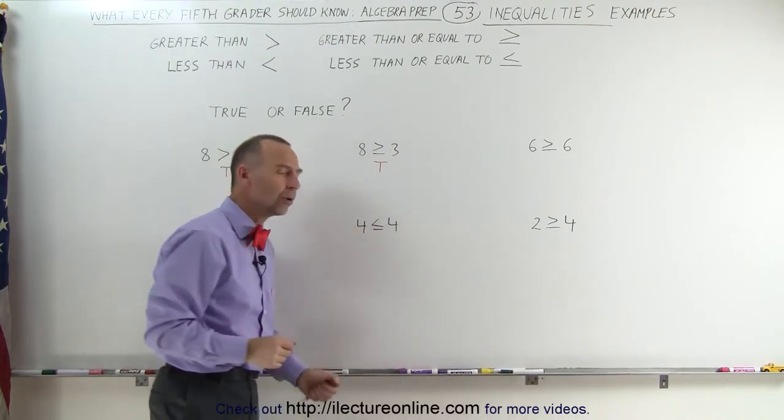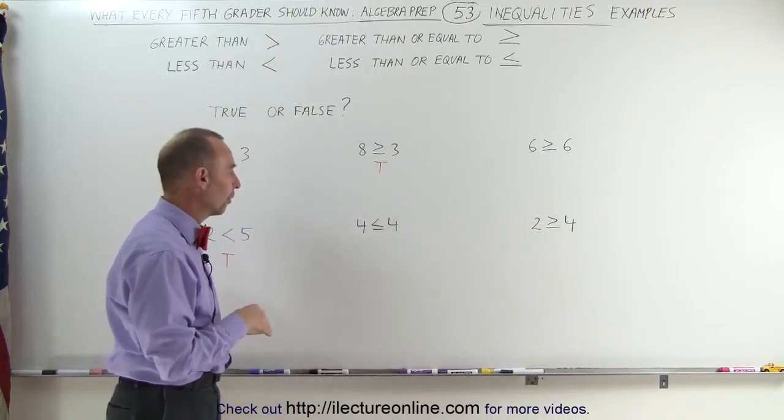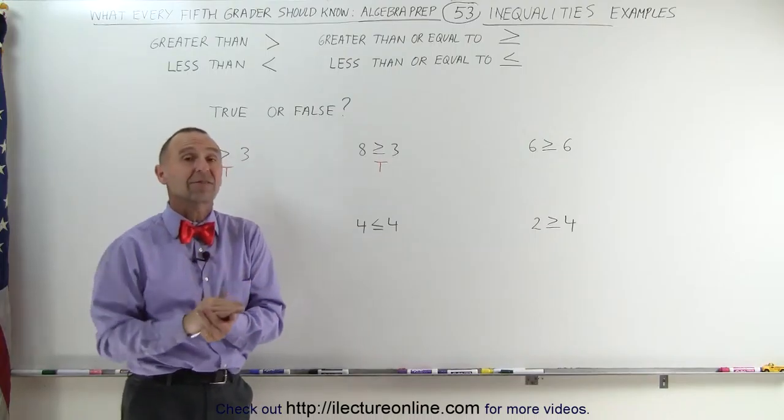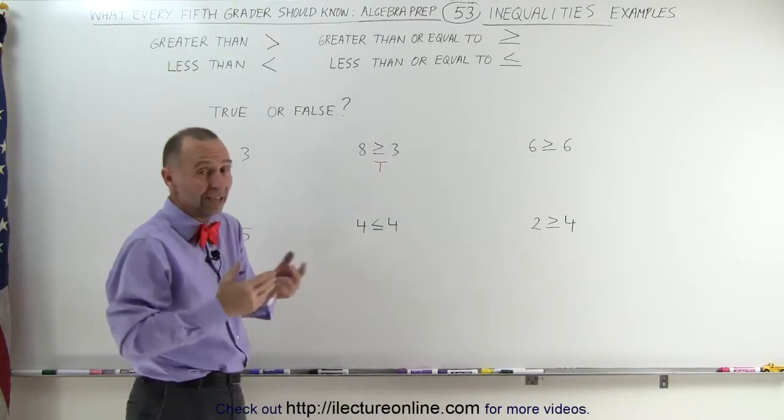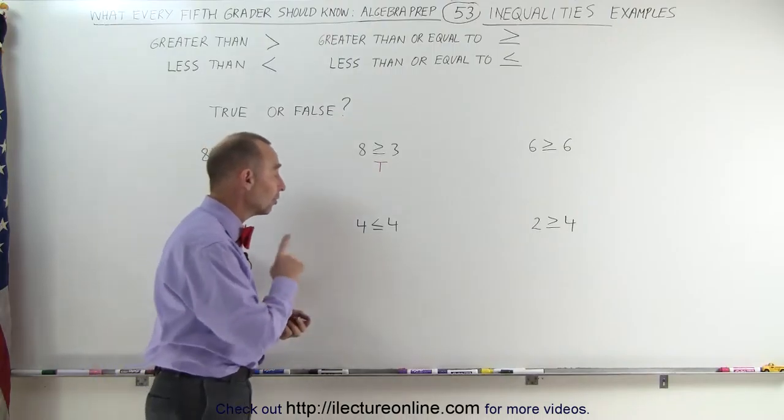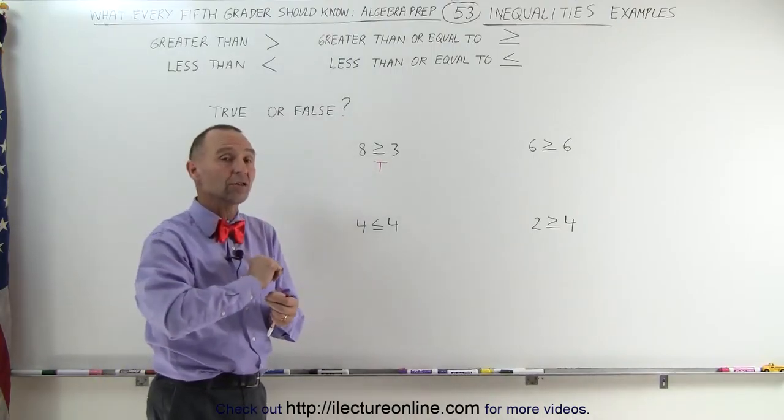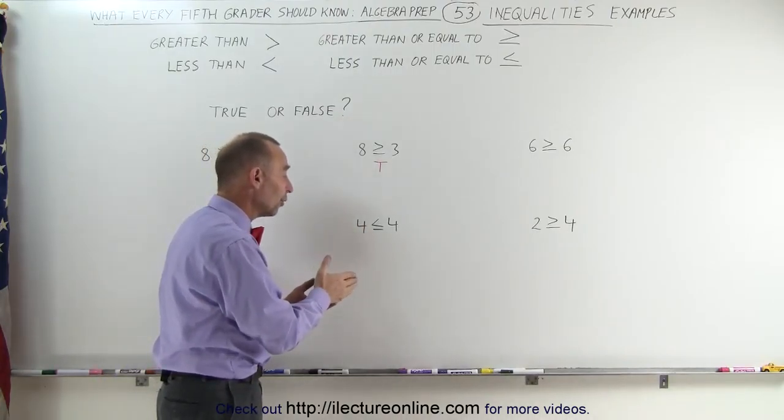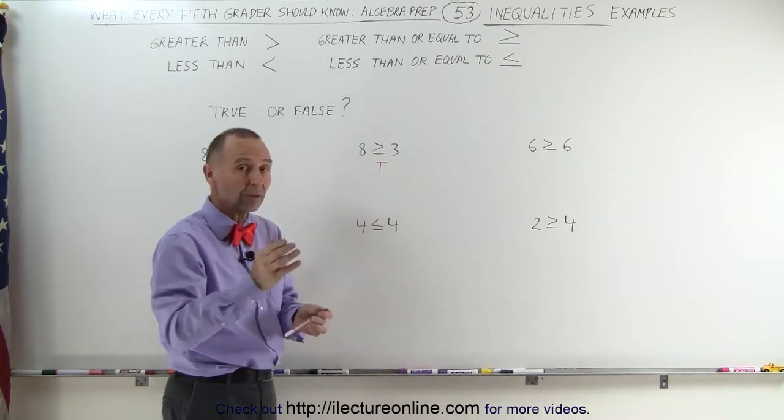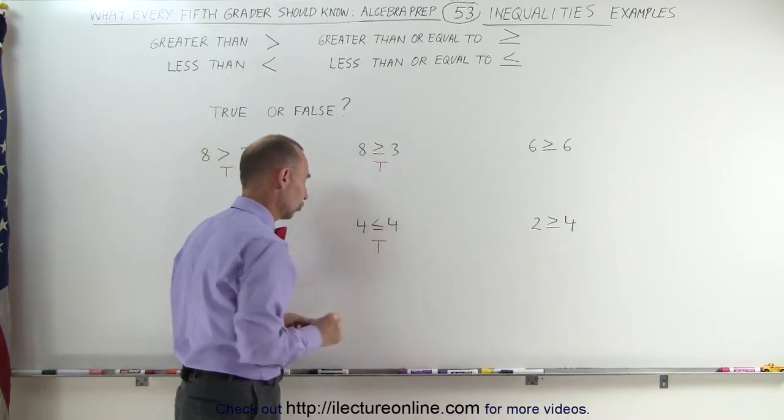How about this statement, 4 less than or equal to 4? We definitely know that 4 is not less than 4, but is it equal to? And the answer is, of course, yes, 4 is equal to 4. Since it only needs to abide by one of the conditions, either it is less than 4 or it is equal to 4, since one of them is true, this expression is true.